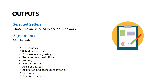The outputs of Conduct Procurements include selected sellers — those chosen to perform the work — and agreements or contracts with them. Contracts can include deliverables expected from the seller, the schedule baseline, performance reporting, roles and responsibilities, pricing and payment terms (perhaps per deliverable or by the hour), the place of delivery, inspection and acceptance criteria, warranty, penalties, and incentives. These are all things that could be included in a contract with a seller.